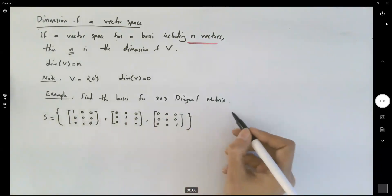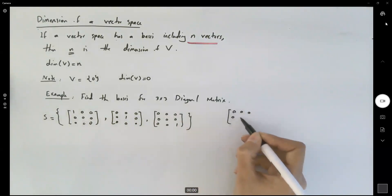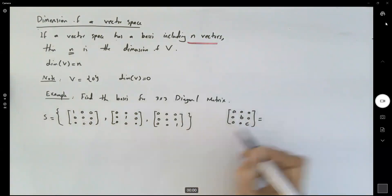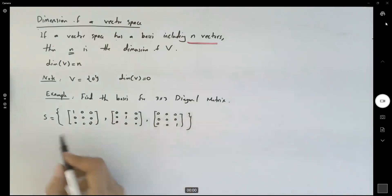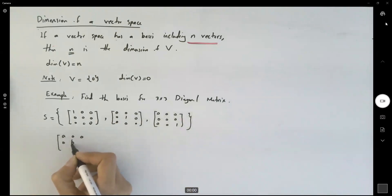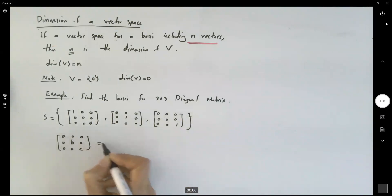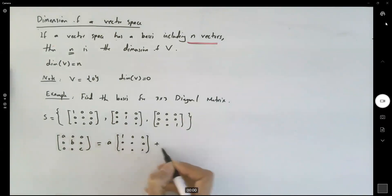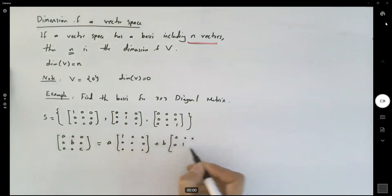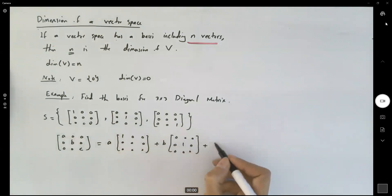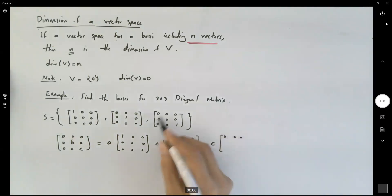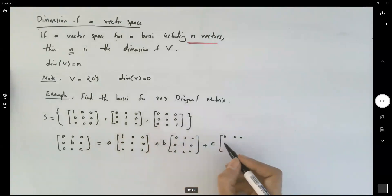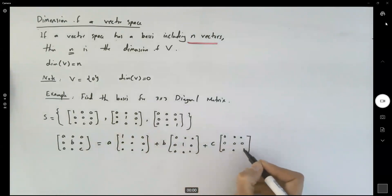Any diagonal matrix — as you remember, a diagonal matrix has only scalars on its main diagonal — can be written as a linear combination of these three vectors. So you can write any diagonal matrix as A·(first matrix) + B·(second matrix) + C·(third matrix). We're saying 'vectors,' but these are representing mathematical objects. Don't think about just vectors in calculus — these vectors are mathematical objects.